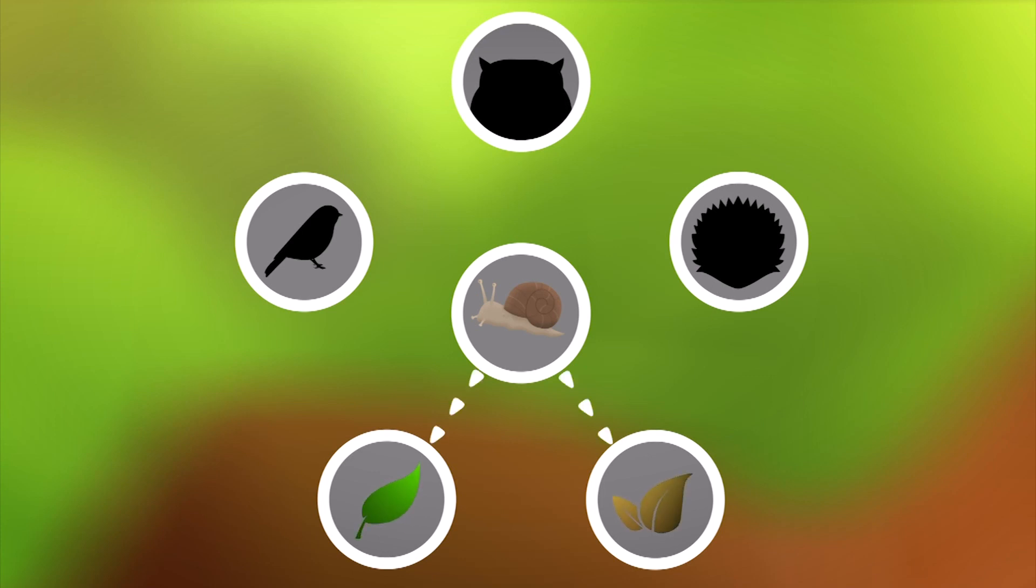Small animals eat plants and then those small creatures are eaten by bigger creatures.